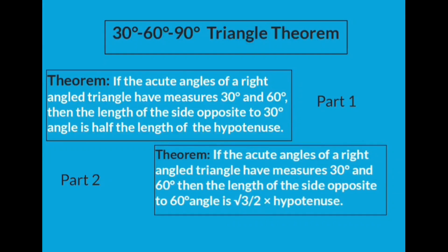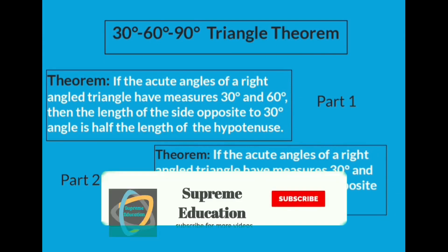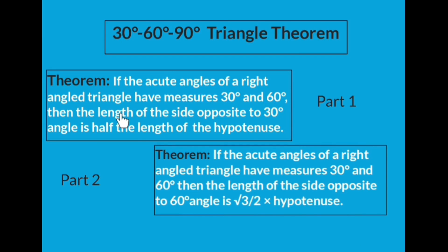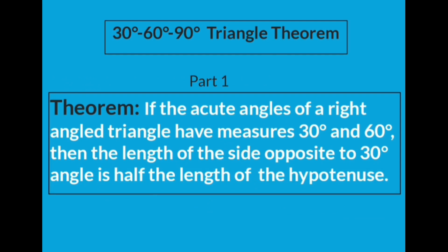Hello students, today we are going to learn the 30-60-90 triangle theorem. We have to learn this theorem in two parts: Part 1 for the side opposite to the 30-degree angle, and Part 2 for the side opposite to the 60-degree angle. Part 1 states: if the acute angles of a right-angled triangle measure 30 degrees and 60 degrees, then the length of the side opposite to the 30-degree angle is half the length of the hypotenuse.